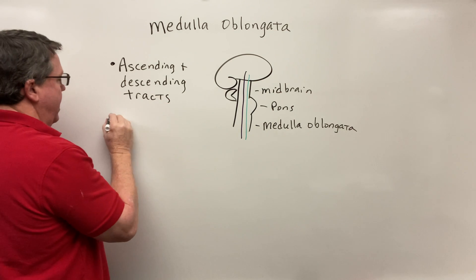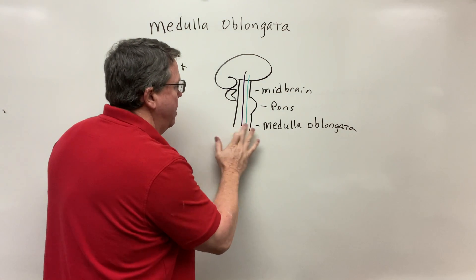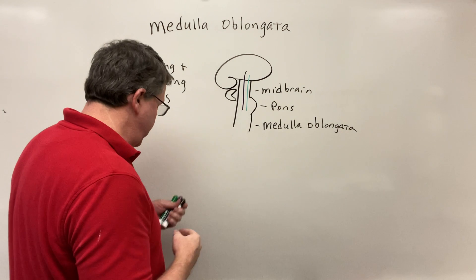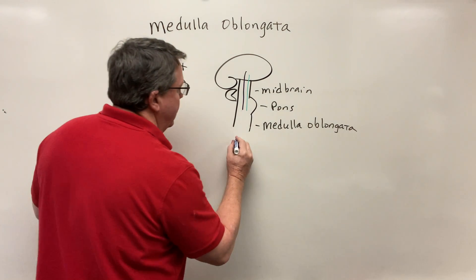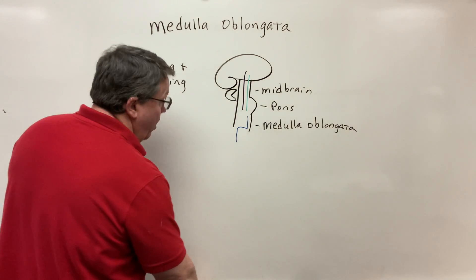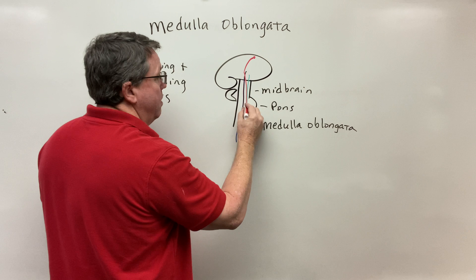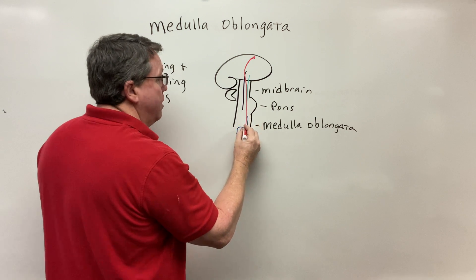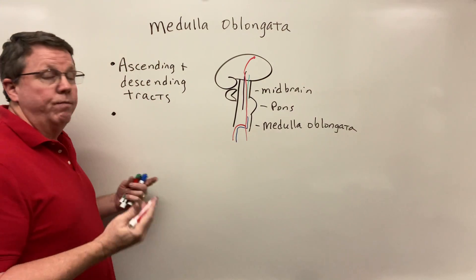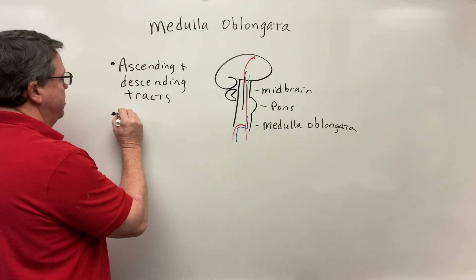The medulla oblongata is also an area where a lot of nerves cross over. The fasciculus cuneatus and fasciculus gracilis synapse here and then cross to the opposite side, continuing up to the brain. Additionally, nerves coming from the brain travel down the brainstem to the medulla oblongata, where some cross over to the other side, continue down, or do a combination of both.